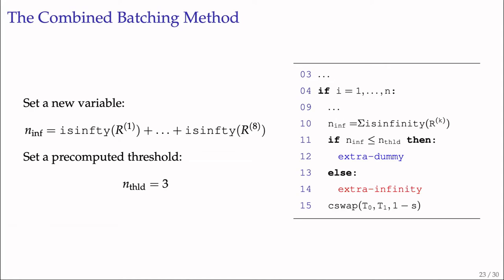Based on this observation, our idea is to combine the two approaches for a more efficient method. We set a new variable as listed and add an if statement to check if this variable is within a predefined threshold. If not larger than this threshold, we perform the extra-dummy method. Otherwise, we go to extra-infinity. From our experiments, the threshold value for our OAYT-style implementation is 3. We call this the combined method.